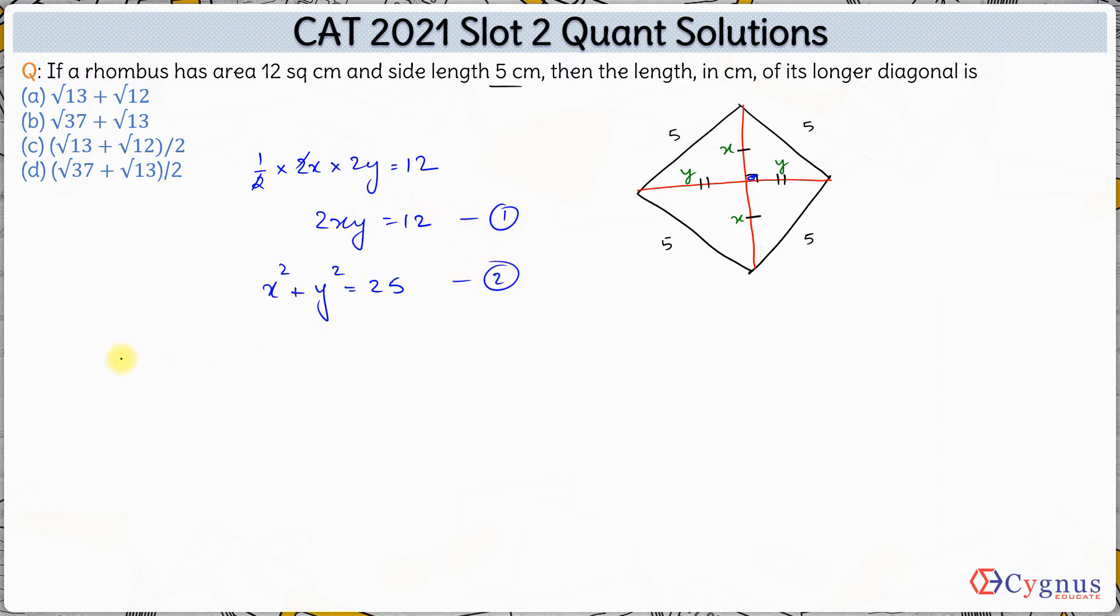Now if we add both these equations 1 plus 2, what we get is x square plus y square plus twice of x into y is 37. Hence we have x plus y whole square is 37. Hence x plus y is square root of 37.